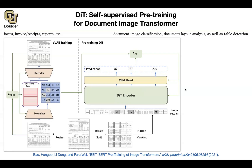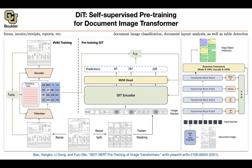Let's say you want to do document layout analysis or table detection — what would you do when it comes to fine-tuning? You take your document, split it, do linear projection, and these are going to give you your input patches. Push them through the transformer blocks. There is a feature pyramid network type of idea where you are going to be combining and looking at your image in different scales — one sees the big picture, another sees a bit more detail.